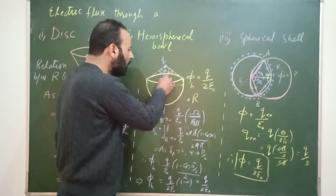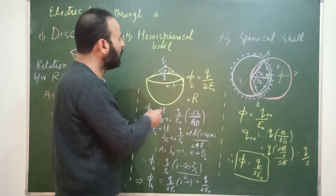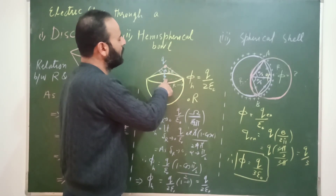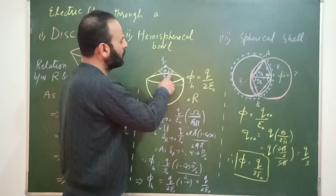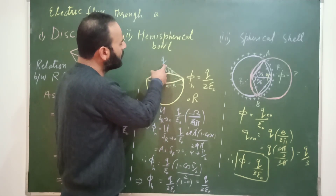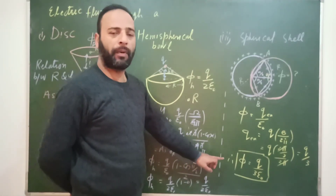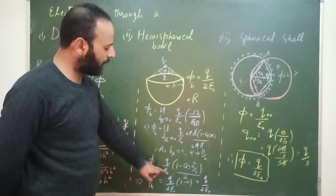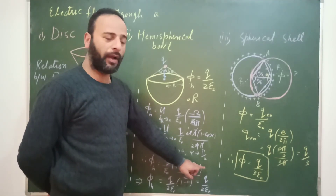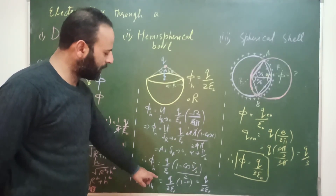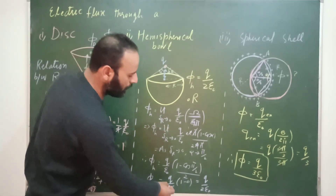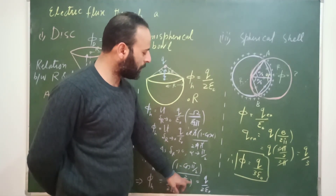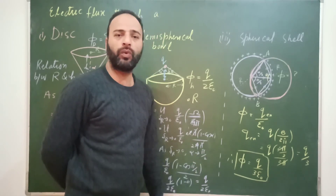As δr → 0, the charge approaches the center of the base, causing the semi-vertex angle α to increase and tend toward π/2. When α → π/2, we get φ_h = (Q/ε₀)(1 − cos(π/2))/2. Since cos(π/2) = 0, this gives φ_h = Q / (2ε₀), confirming our direct result.